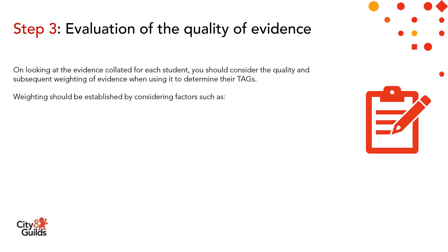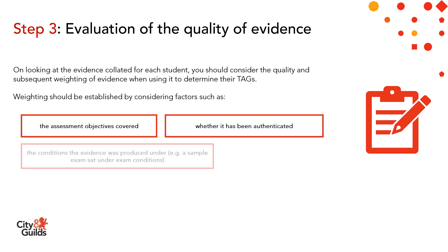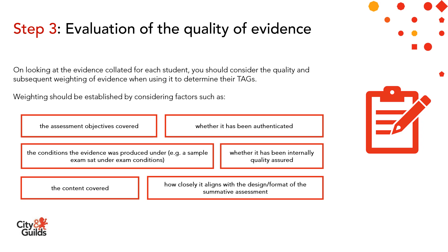Now that you've collected the evidence, step three in the process is evaluating the quality of that evidence. On looking at the evidence collected for each student, you should consider the quality and subsequent weighting of that evidence when using it to determine their TAGs. Weighting should be established by considering factors such as the assessment objectives covered, whether it has been authenticated, the conditions the evidence was produced under — for example, a sample exam sat under exam conditions — whether it's been internally quality assured, the content covered, and how closely it aligns with the design and format of the summative assessment.